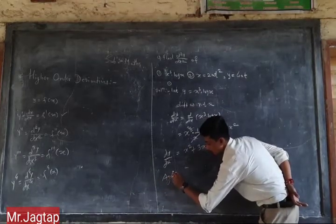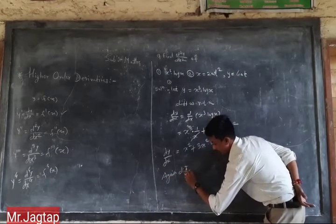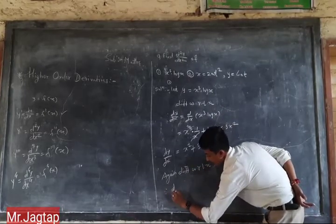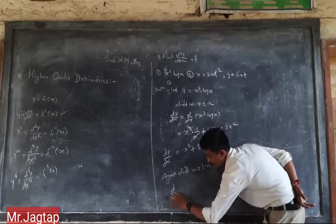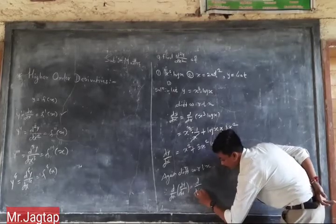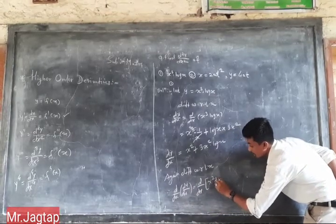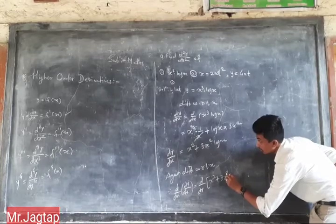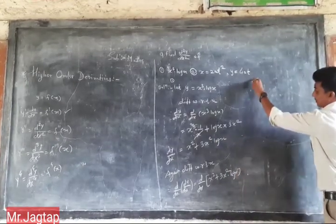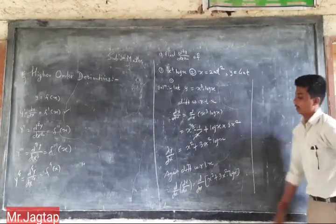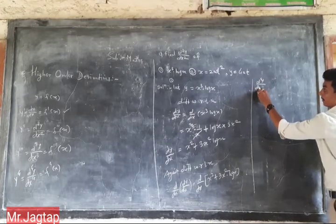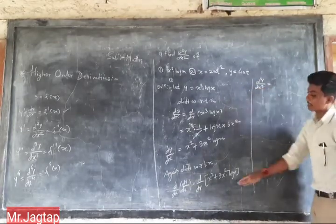Second derivative means again differentiate with respect to x. Therefore d/dx of dy/dx equals d/dx of x-squared plus 3x-squared log x. d²y/dx² equals — separate the derivatives — derivative of x-squared is 2x, plus 3 is constant so we take it outside the derivative: 3 into d/dx of x-squared log x.